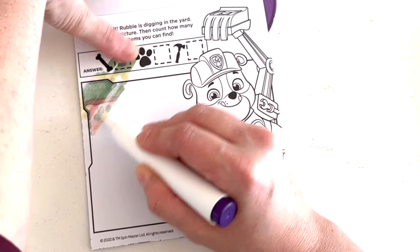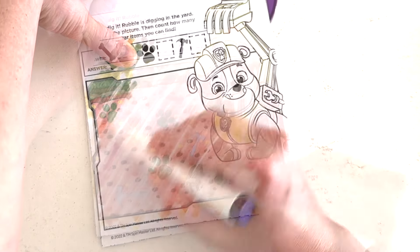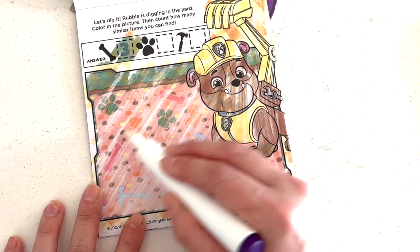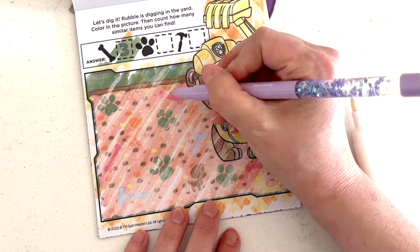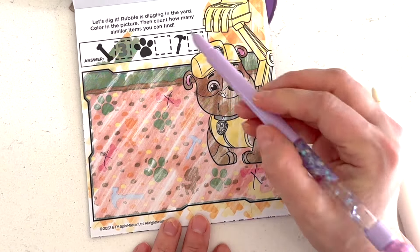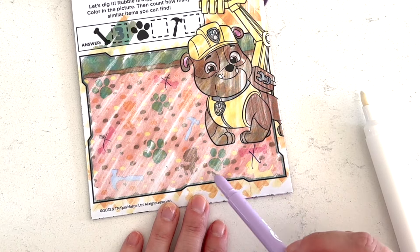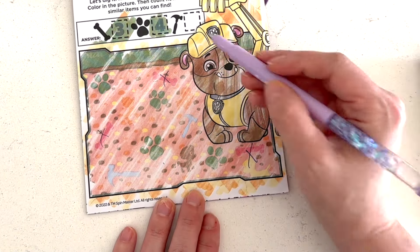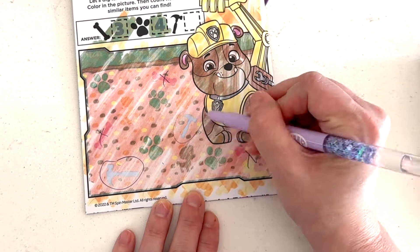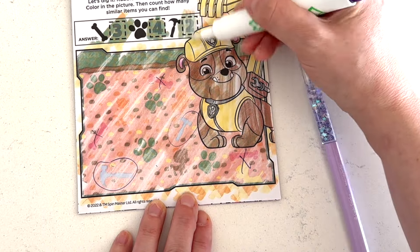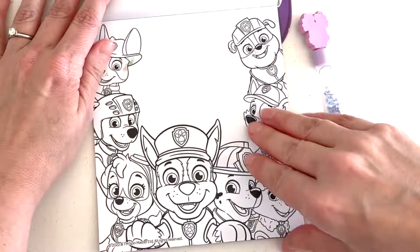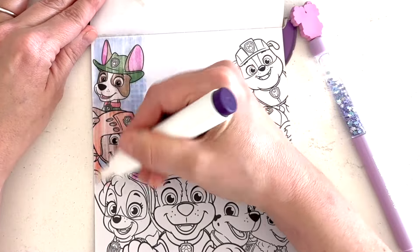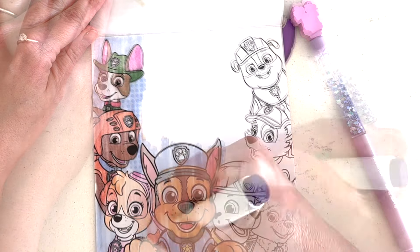Let's dig it. Rubble is digging in the yard. Color in the picture. Then count how many similar items you can find. All right. We're going to find. Oopsies. I wasn't supposed to do that yet. We're going to look for bones, paw prints, and hammers. Okay. How many bones do we see? Do we see all three of them? Yep. One, two, three. How many paw prints do we see? One, two, three, four. Let's color it in and see if we're right. Yay. And how many hammers do we see? One, two. Let's see. We're right. Woohoo!